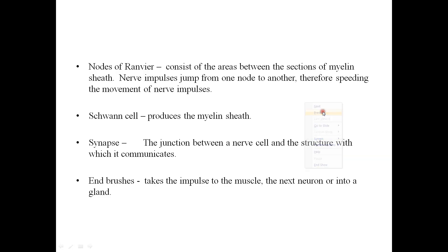The nodes of Ranvier are sections of the axon consisting of areas between segments of the myelin sheath; nerve impulses jump from one node to the next. Nerve impulses move much faster along myelinated nerve fibers than unmyelinated ones. The speed of the impulse is also affected by the diameter of the axon, and the Schwann cell is the cell that produces the myelin sheath.